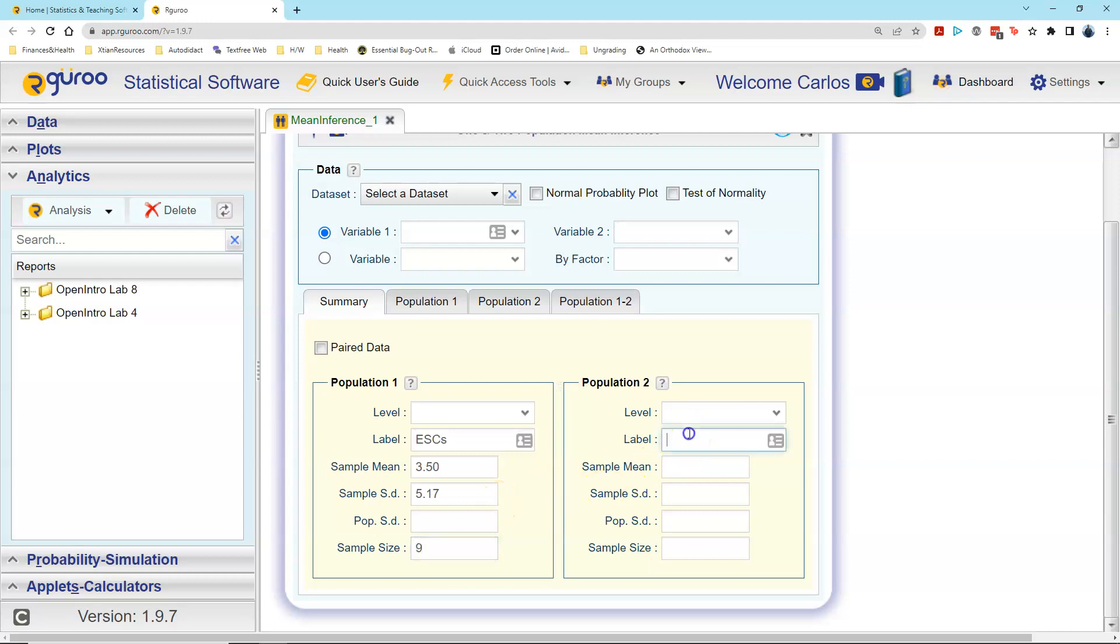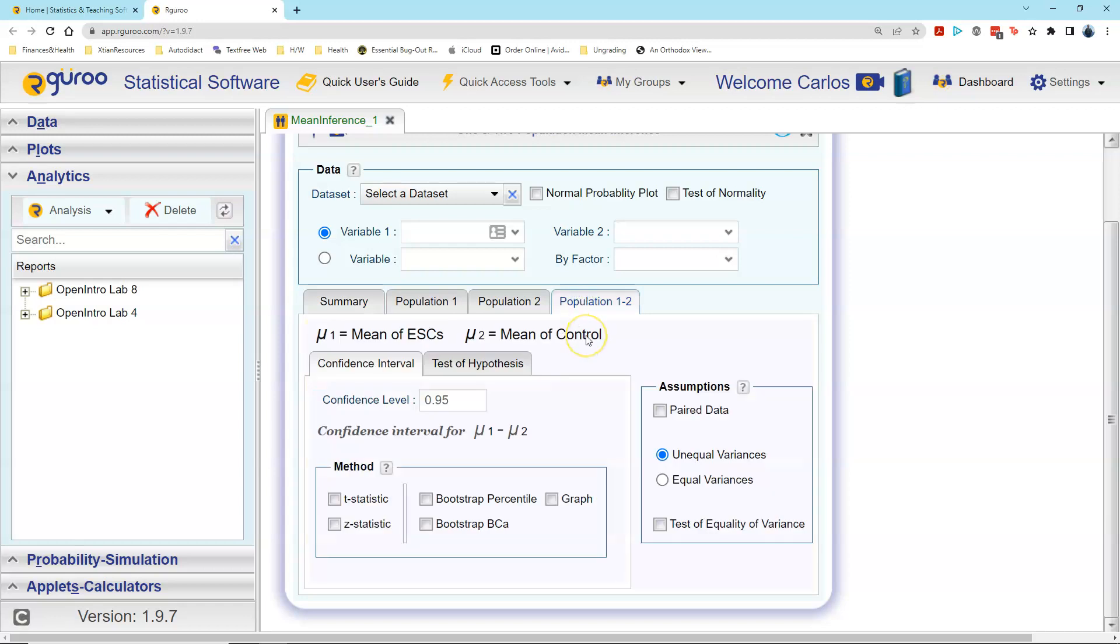I then come over here to label for the second population, which is our control group. So I type that in, type in the sample mean of -4.33, sample standard deviation of 2.76, and then lastly, the sample size for that is also nine. I have now entered in all the information we need to perform an inferential statistics confidence interval construction.